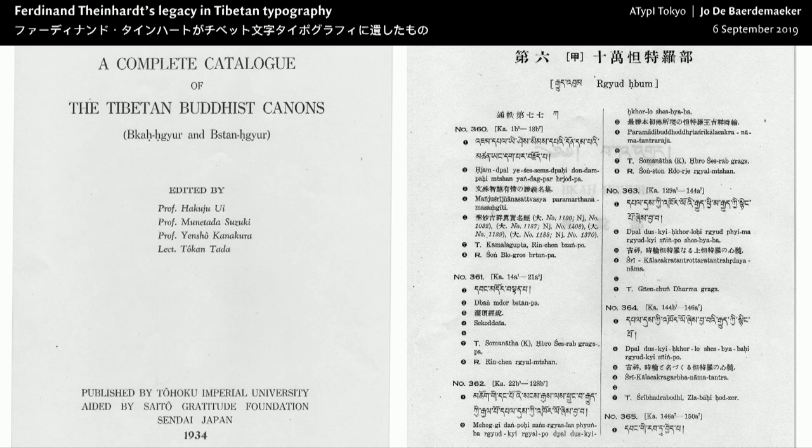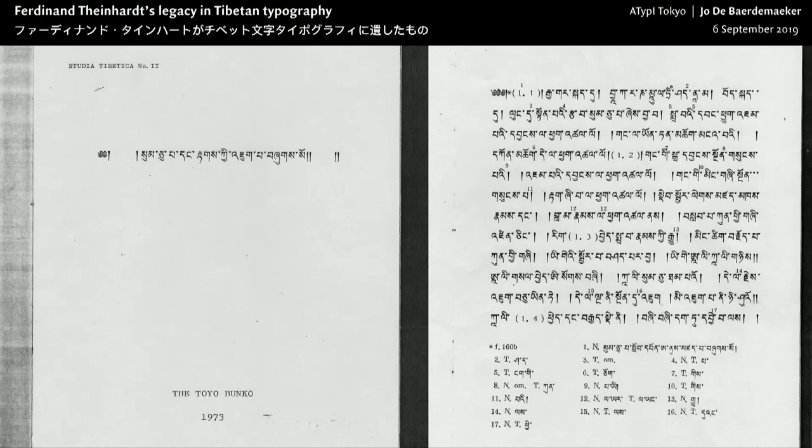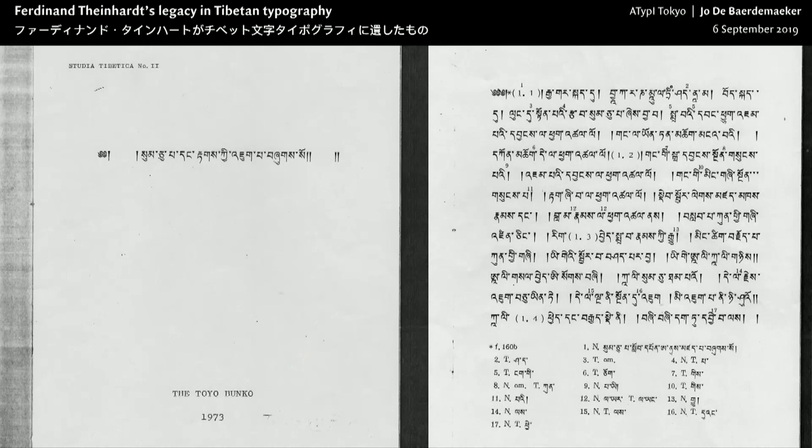These are the covers from Brill, and these are some beautiful pages of the catalogs that the Tokyo Press printed to catalog all the manuscripts and woodblocks preserved in the library there in Tokyo — and even to Kyoto.